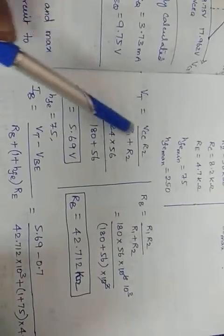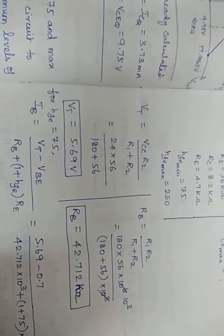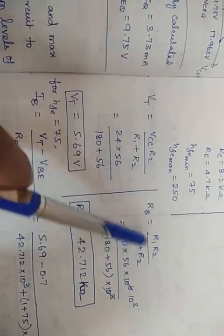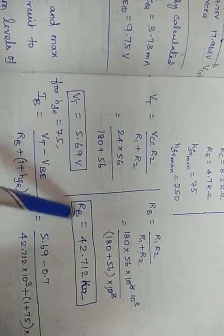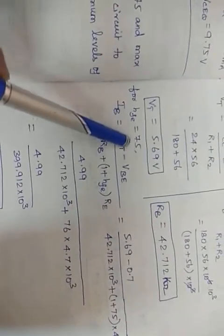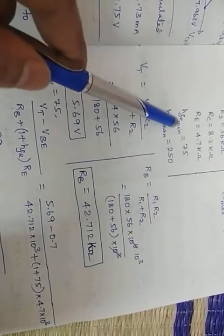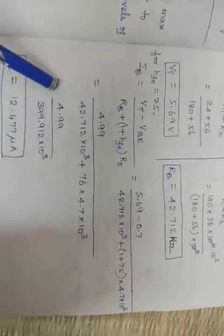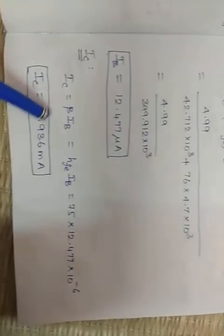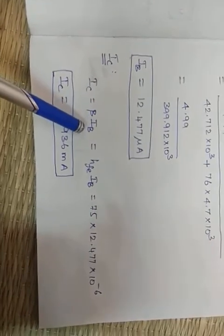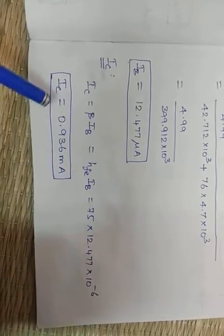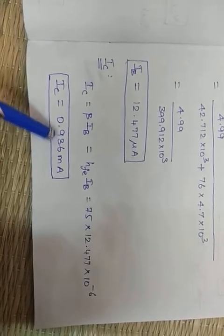Start with VT the same way as before. After simplifying, VT = 5.69V. RB = R1×R2 / (R1 + R2), giving RB = 42.412kΩ. Taking HFE = 75 (minimum case): IB = (VT − VBE) / (RB + (1 + HFE) × RE) = 12.477 microamps. IC = β × IB = 75 × 12.477μA = 0.936 milliamps.